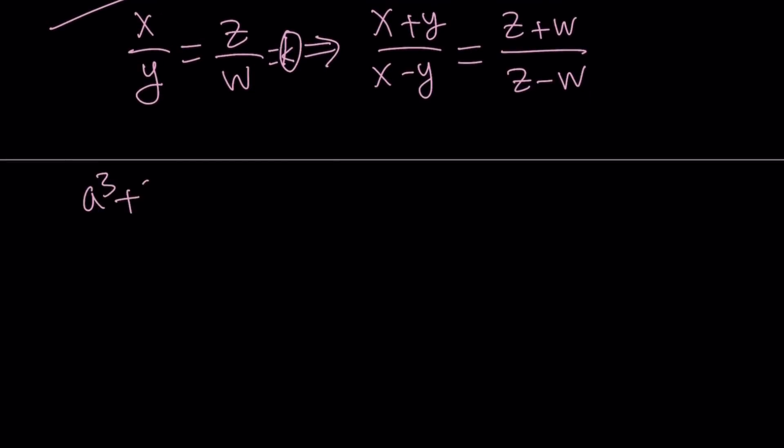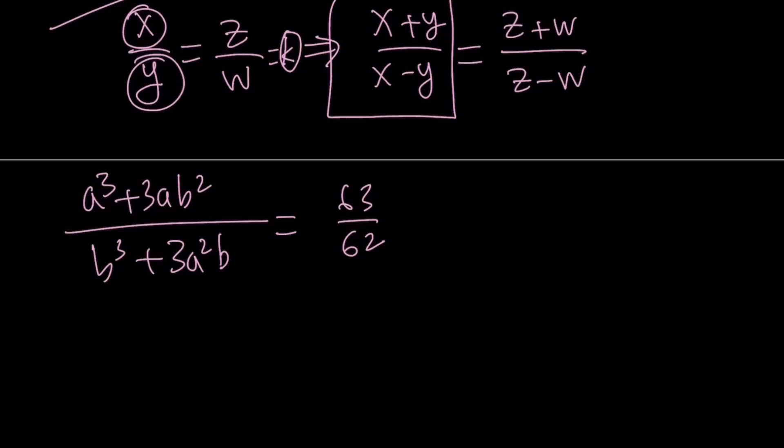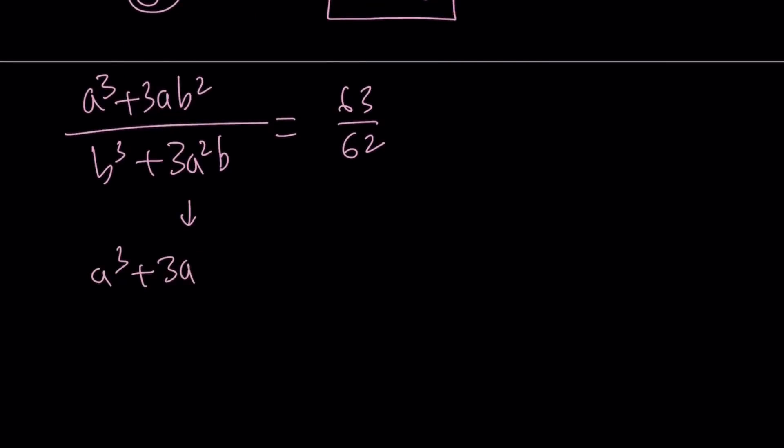We have a cubed plus 3ab squared divided by b cubed plus 3a squared b. And that is equal to 63 over 62. So in this case, the numerator is my x and the denominator is my y. And I'm going to use this one. So I'm going to add the numerators, the numerator and the denominator. So it's going to look like the following from here. a cubed plus 3ab squared plus b cubed plus 3a squared b. That is divided by the difference of the numerator and the denominator. So it's going to look like this. a cubed plus 3ab squared. And then I'm going to subtract from this the denominator, which is b cubed plus 3a squared b.